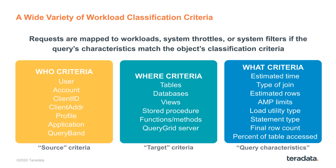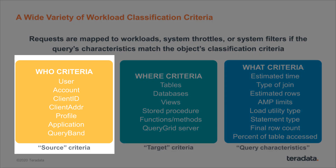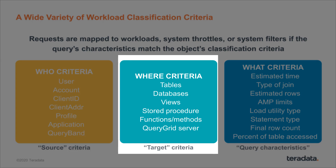These are the three main groupings of classification criteria in Teradata Workload Management. We've got what I call WHO criteria, which is the information that's known at session logon time — like the user, or even the IP address that the session is originating from. Then we have WHERE criteria, which is the database objects that this particular query is going to be touching or operating on — things like views, databases, even stored procedures.